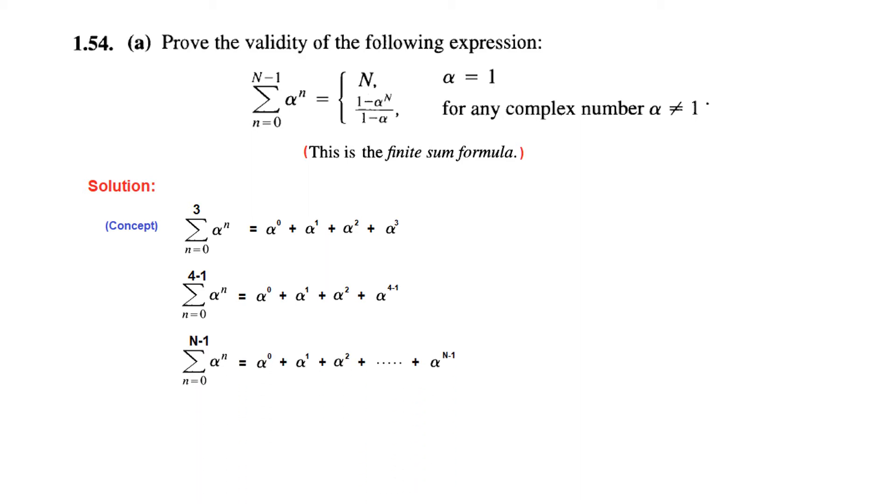If instead of 4 minus 1, we have n minus 1, then what will be the last term? It will be alpha^(n-1). Here it was alpha^(4-1), here it will be alpha^(n-1). This is the general concept of the summation series.